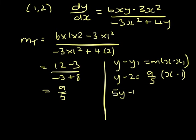Multiplying 3 by 5, 5y minus 10 equals 9x minus 9. 5y minus 9x minus 1 has to equal 0.